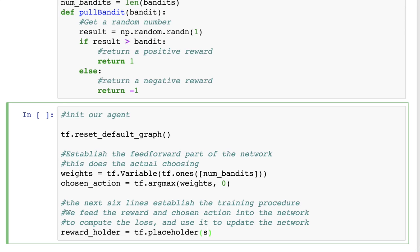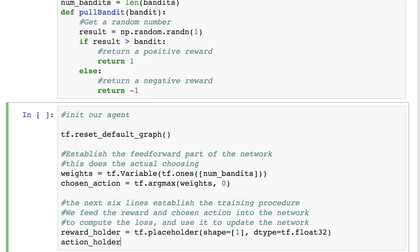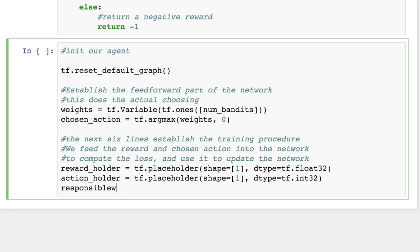We now need to establish what this training process looks like. Since we want to feed the reward and chosen action into the network to compute the loss, and then use that to update the network, we'll initialize TensorFlow placeholders for both the reward and the action values. Next, we'll define the responsible weight. It corresponds to the units in the output layer, which corresponded to the chosen action. When updating the policy, we want to update the likelihood of the actions we actually took, as opposed to all possible actions. So this will be a slice of our weights.